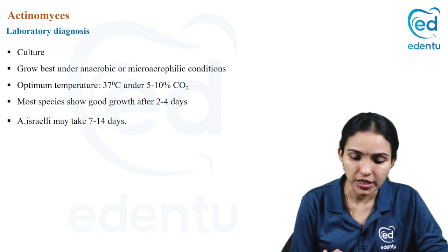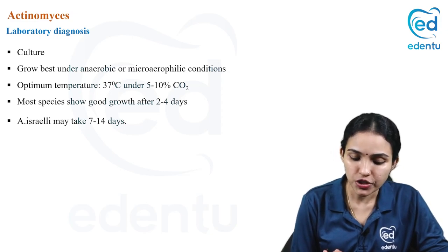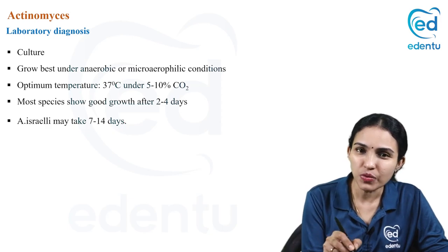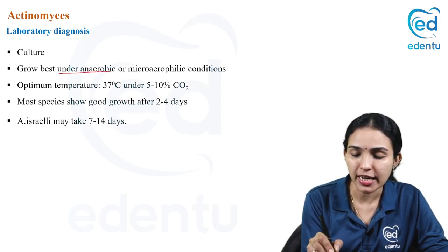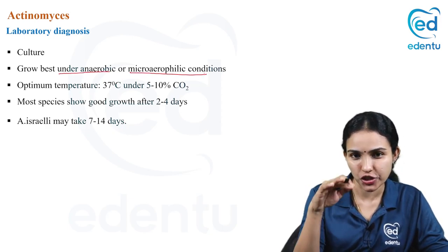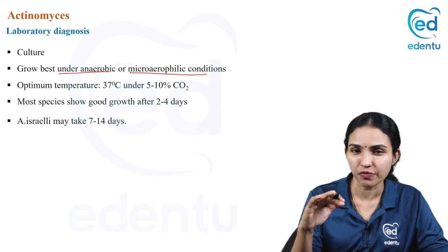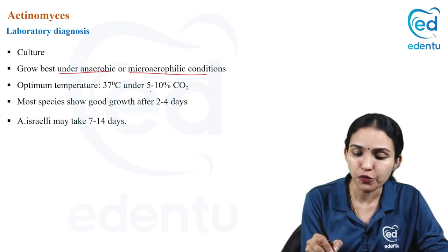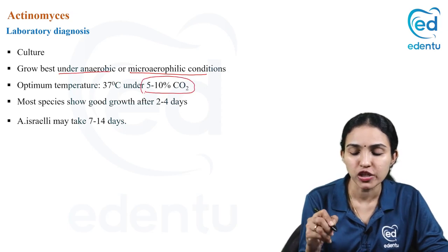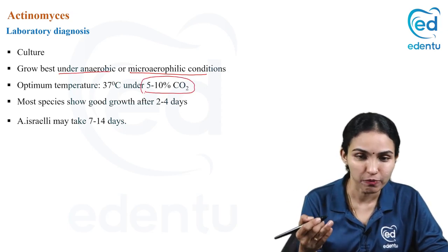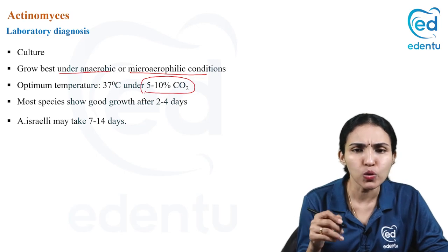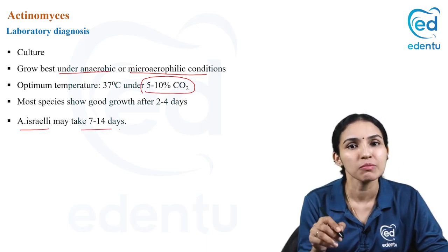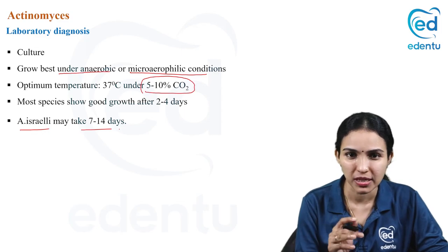For culture, actinomyces can grow on ordinary media like blood agar, but they grow best under anaerobic or microaerophilic conditions — under low or absent oxygen. Providing 5–10% carbon dioxide further improves growth. Most species grow after two to four days, but israelii may take up to a week.